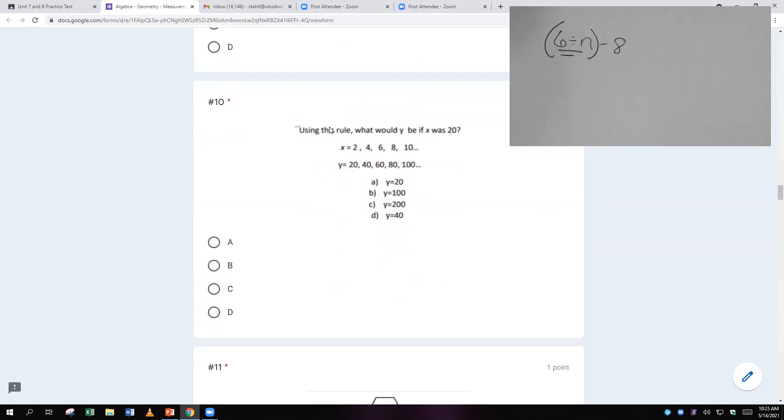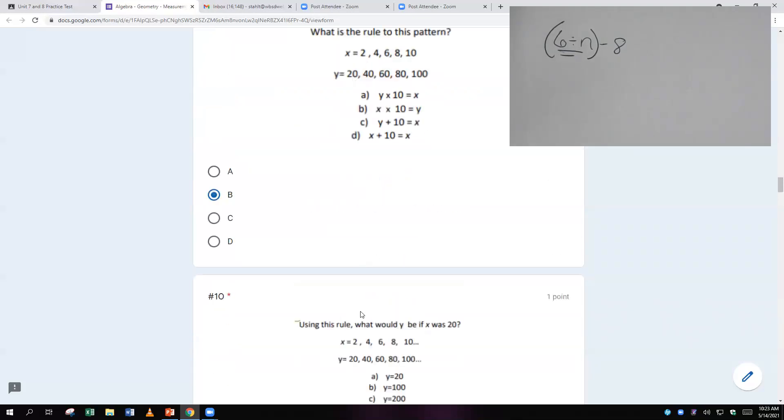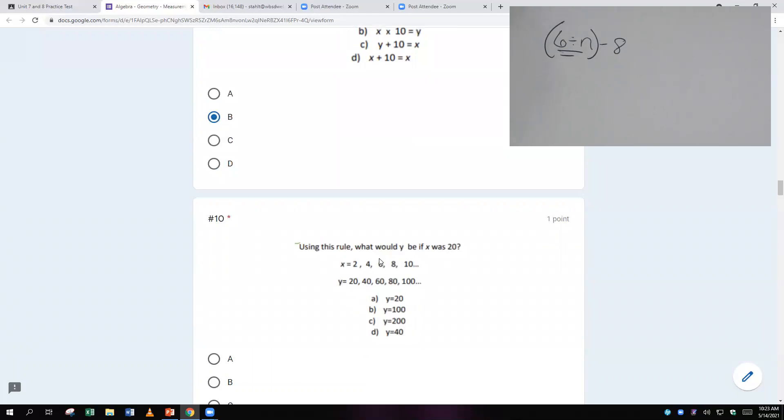Using this rule, what would Y be if X was 20? Ooh, so is it the same rule? Yeah, it looks like it. So times 10, 10, 10, 10, 10, 10, 10. If X was 20, it would turn into 200, right? 20 times 10 is 200. So I'm going to go with C.